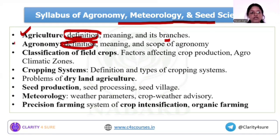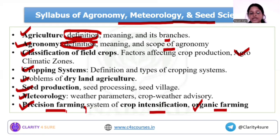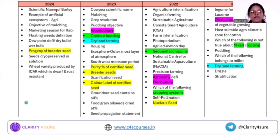Please do not miss a single definition from this part. The syllabus covers definition of agronomy, scope of agronomy, classification of field crops, agroclimatic zones, cropping systems — definition and types — problems of dryland agriculture, seed production, seed processing, seed village, meteorology, weather parameters, crop weather advisory, and the last: precision farming, system of crop intensification, and organic farming. You can see direct MCQs on these concepts mentioned in the syllabus, which indicates its importance. You have to cover every keyword included in the syllabus.